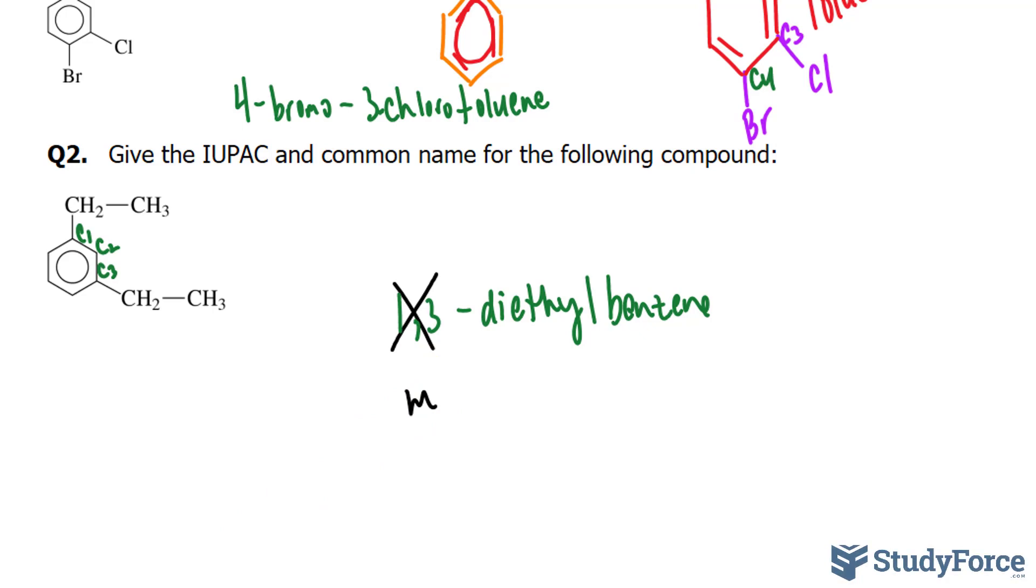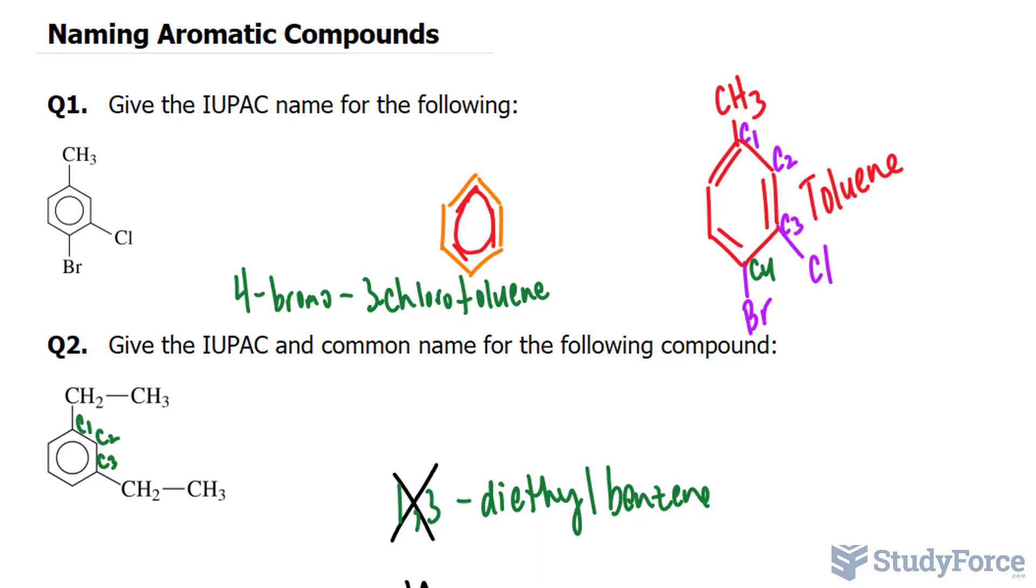If they're in the first and second position, you can replace the M with an O, which represents ortho. And if they're in the one and fourth position, then you can replace it with para, or P. So we can actually call this molecule metadiethylbenzene. And so there you have it. Two examples on how to name aromatic compounds.